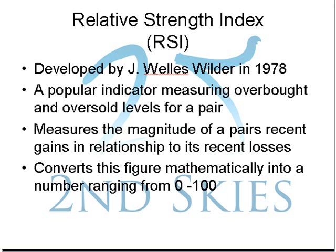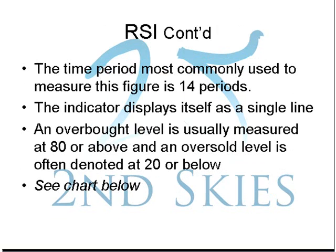The RSI is pretty simple in its design. It measures the magnitude of a pair's price decline against its gains, and converts this into a number between 0 and 100. The most common time period used is 14 periods — whether that's an hourly, daily, or monthly chart, it's 14 hours, days, or months depending on the timeframe. It displays itself as a single line. An overbought level is usually marked by a reading of 80 or sometimes 70 and above, while an oversold level is denoted by a reading of 20 or 30 and below.